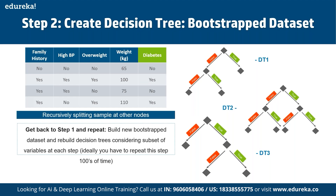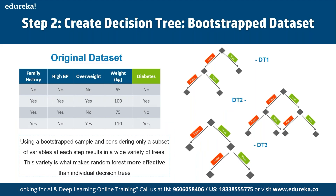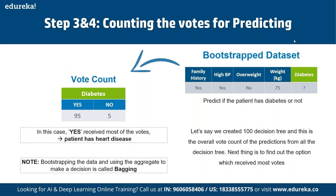We then create a decision tree using the bootstrap dataset — for example, using blood circulation as the root node. Instead of considering all four variables at each step, we consider only two, like blood circulation and blocked arteries. We repeat this process hundreds of times, building new bootstrap datasets and decision trees using a subset of variables each time. Using bootstrap samples and only a subset of variables creates a wide variety of trees, which is what makes random forest more effective than individual decision trees.